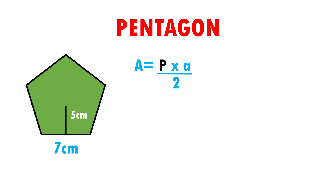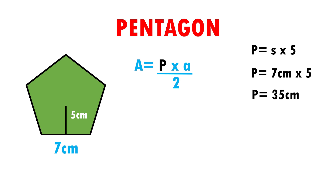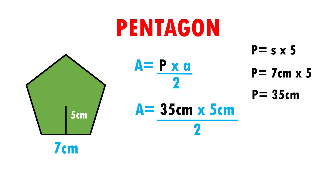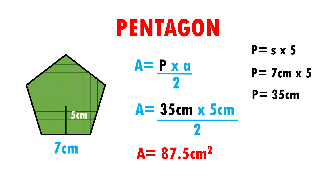The formula to find the perimeter is: perimeter is equal to side times 5. When substituting data, perimeter is equal to 7 cm of each side by 5 sides. When multiplying, 7 times 5 gives me 35 cm. Now, substituting into the area formula: area is equal to 35 cm, which is the perimeter, times 5 cm, which is the apothem, over 2. And 35 times 5 gives us 175, divided by 2 gives us 87.5 cm squared. This means that in our pentagon can fit 87.5 squares of 1 cm per side.